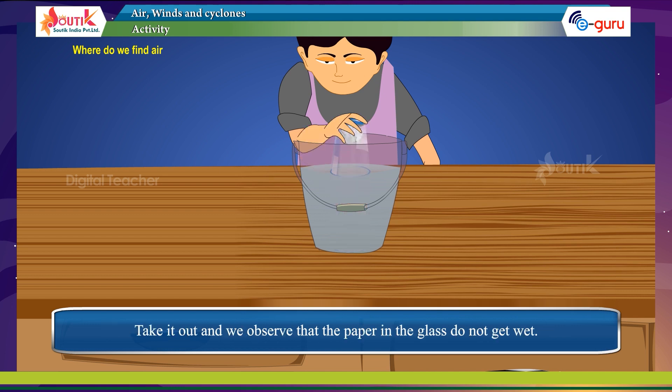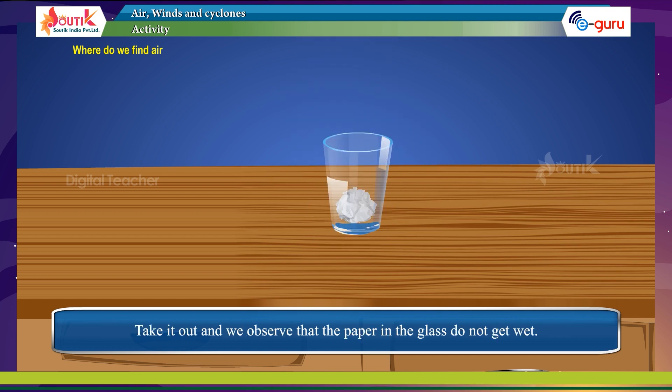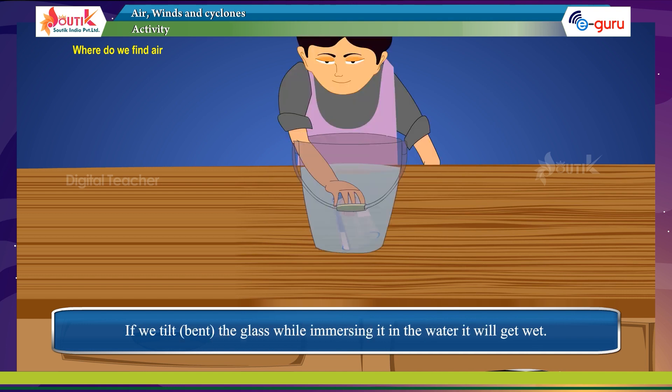Keep the glass straight and press it so that the glass is completely under water. Take it out and observe that the paper in the glass does not get wet. If we tilt the glass while immersing it in the water, the paper will get wet.